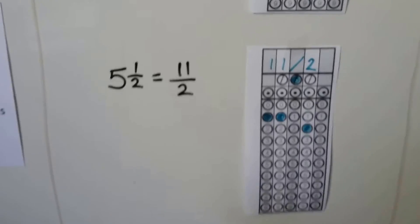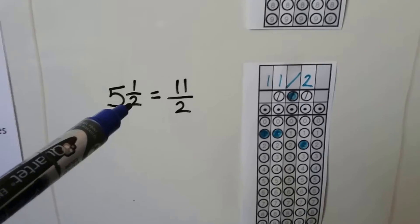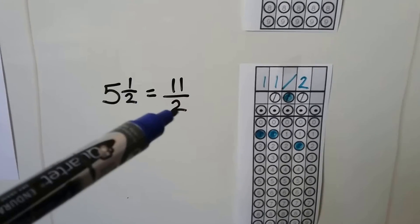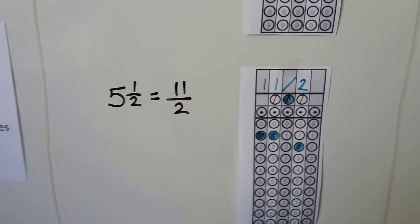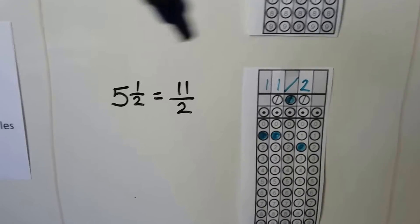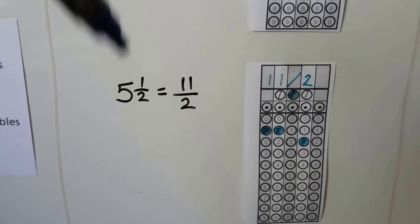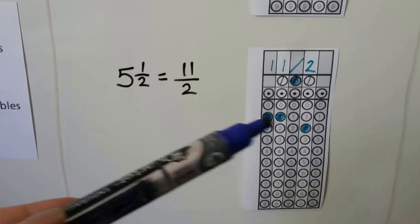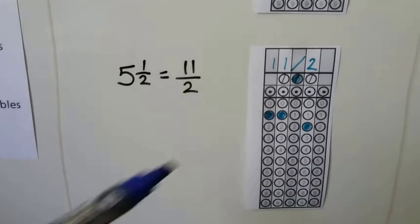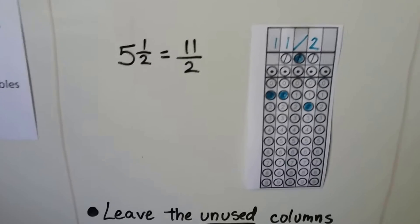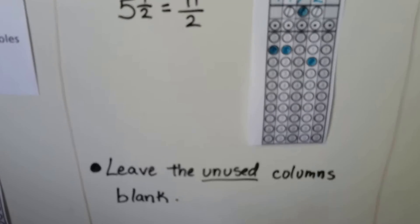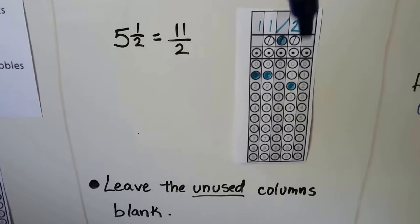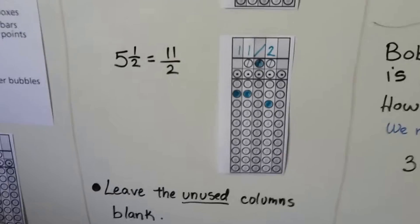If we have 5 and a half, we multiply the 5 times the denominator 2 to get 10, we add that 1 numerator, and we have 11 halves. We keep that denominator. We write it in as 11 halves. You cannot write it in as 5 and a half, it'll be marked wrong. So it'd be a shame that you have the right answer but didn't fill in the grid correctly. Remember to leave any unused columns blank.